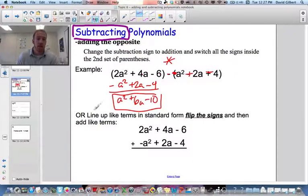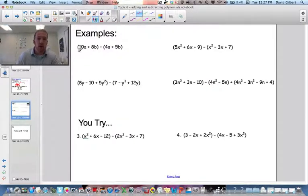Okay? So here's a couple more examples. 10 minus 4a minus 4a plus 5b. So I'm going to apply the negative. So I've got a minus 4a and a minus 5b. And notice I'm lining up the a's and the b's.